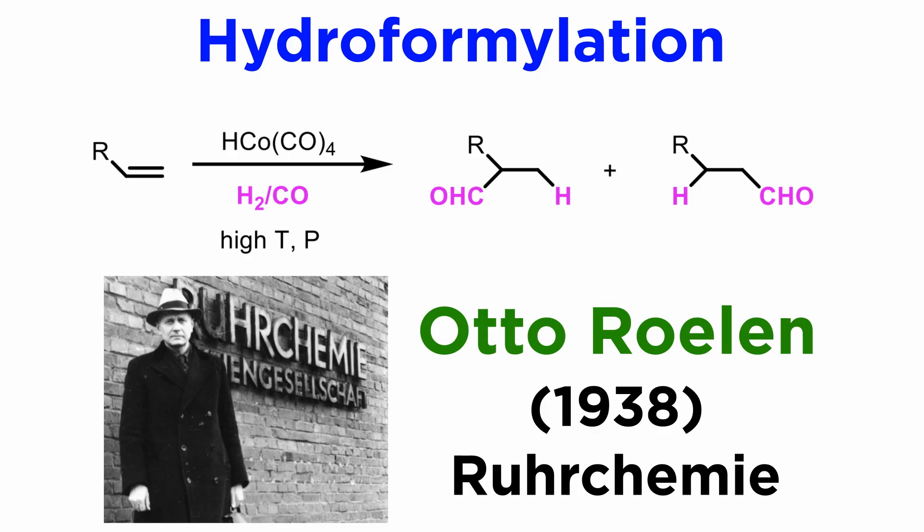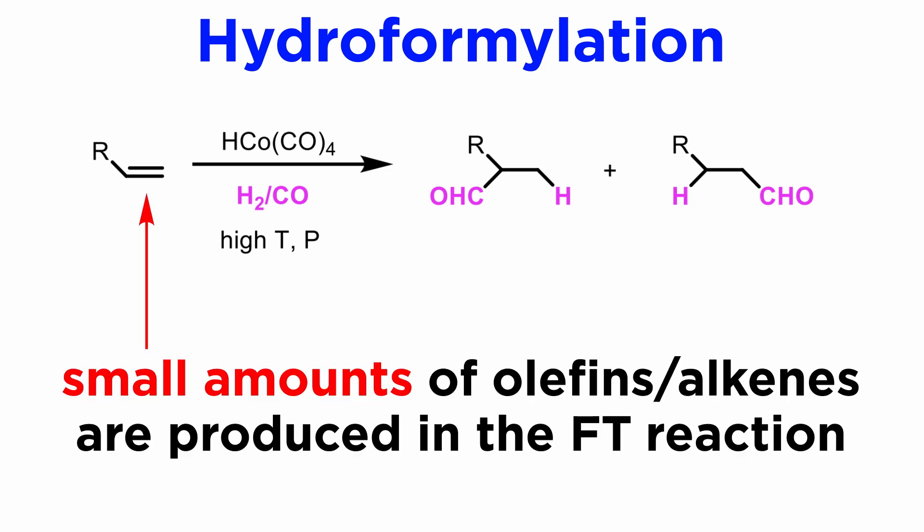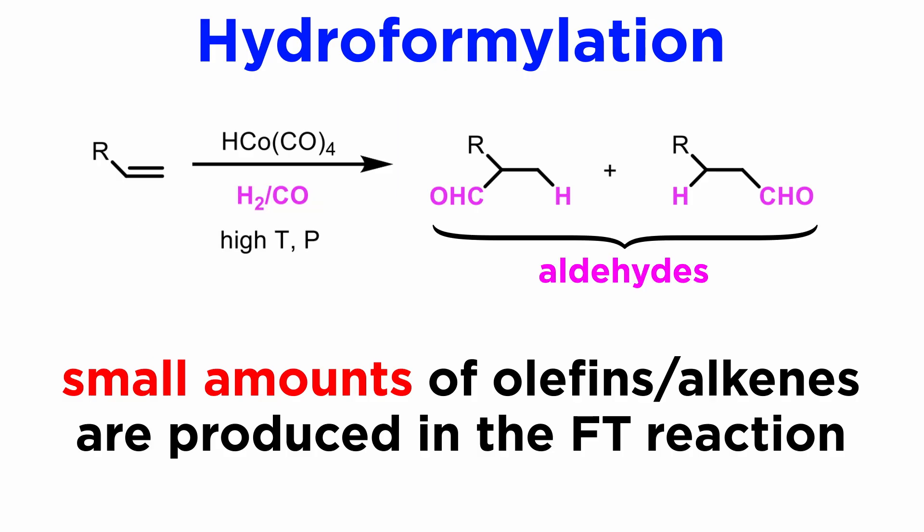Interestingly, hydroformylation was discovered by another German chemist, Otto Rowland, in 1938, while working at the company Ruhrkemi on further development of the Fischer-Tropsch reaction. This reaction also forms small amounts of olefins, or alkenes, and Rowland noticed that syngas was adding to these alkenes to yield aldehydes.